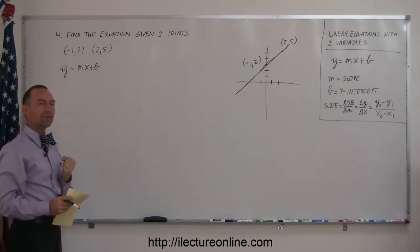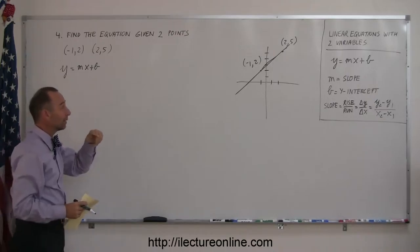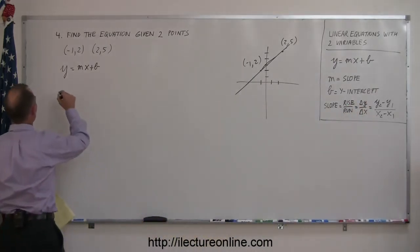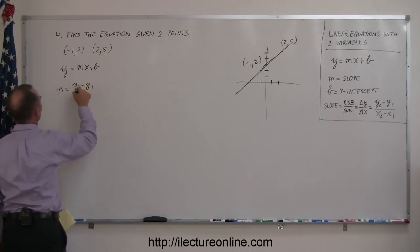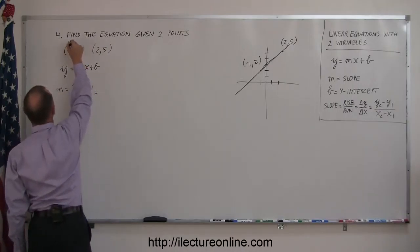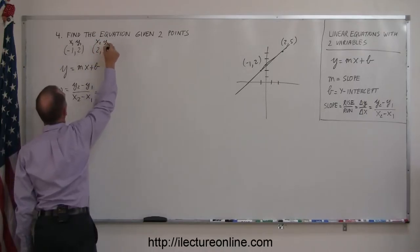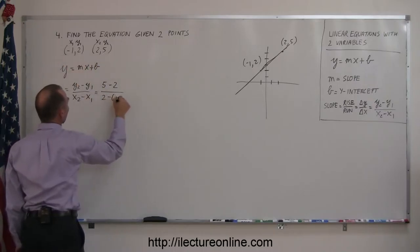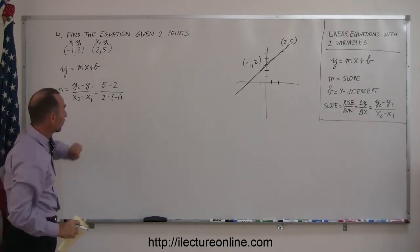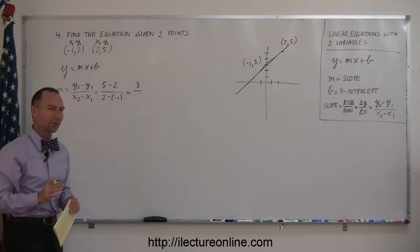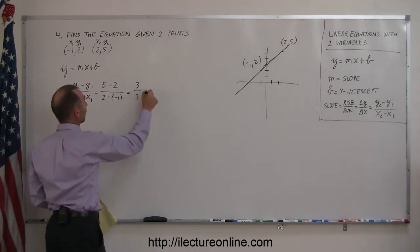Since we're given two points, we want to find the slope first. The definition of slope is the rise over the run, change in y over change in x. So m equals y2 minus y1 over x2 minus x1. It's a good idea to label the points: this is x1 and y1, this is x2 and y2. So y2 is 5 minus y1, which is 2, divided by x2, which is 2, minus x1, which is minus 1. Be careful subtracting a negative, put parentheses around it. This equals 3 divided by 3, which is 1. So my slope is 1.